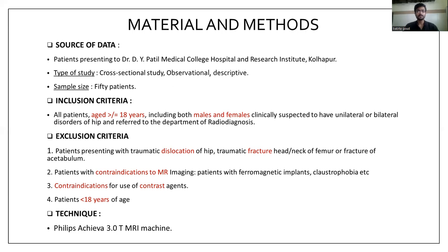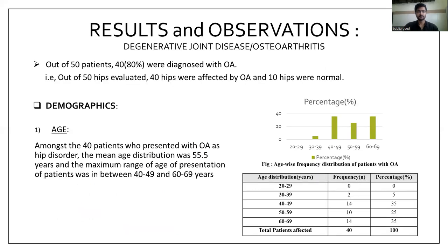The technique used was with the help of a Philips Achiva 3 Tesla MRI machine. Out of 50 patients selected for the study, 40 were diagnosed with osteoarthritis, amounting to about 80%, and the remaining 10 patients had a normal hip.